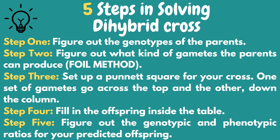There are 5 steps in solving a dihybrid cross problem. First, we need to figure out the genotypes of the parents. Second, figure out what kind of gametes the parents can produce using the FOIL method. Third, set up a Punnett square for your cross — one set of gametes goes across the top and the other down the column. Fourth, fill in the offspring inside the table. And lastly, figure out the genotypic and phenotypic ratios for your predicted offspring.